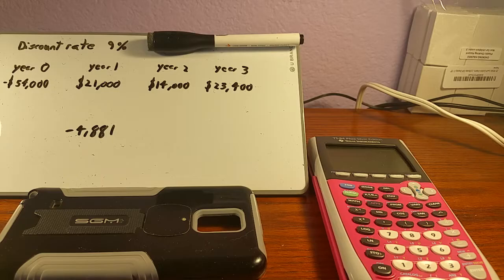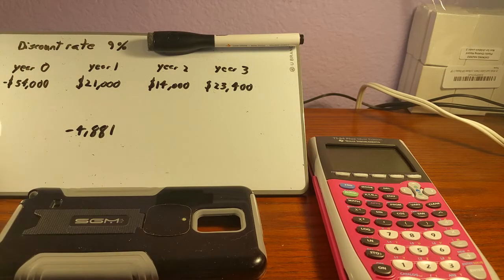Let's just jump right into it. Our problem is we have a discount rate of 9%. We start out paying for the project $54,000, and then we're going to get cash flows once a year for the next three years. Those three years, the expected cash flows will be $21,000, $14,000, and $23,400.